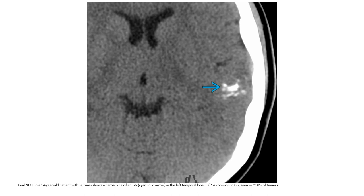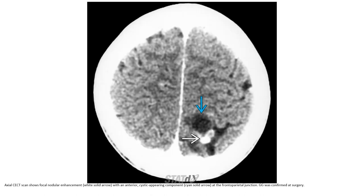This is a non-contrast CT in a 14-year-old patient with seizures, showing a partially calcified ganglioglioma in the left temporal lobe. Calcification is common in ganglioglioma, seen in around 50% of tumors. Contrast-enhanced CT shows a focal nodule with an anterior cystic component at the frontal-parietal junction. Ganglioglioma was confirmed at surgery.